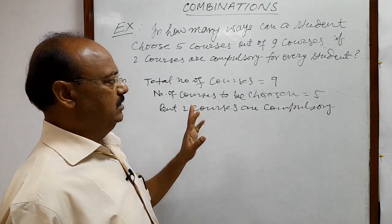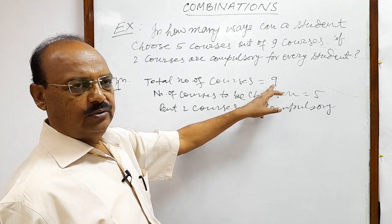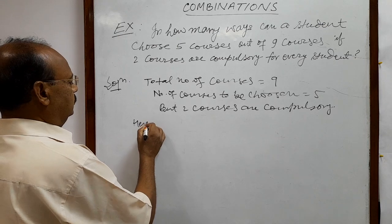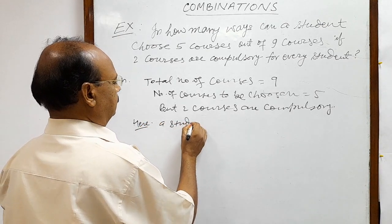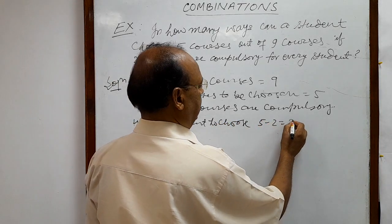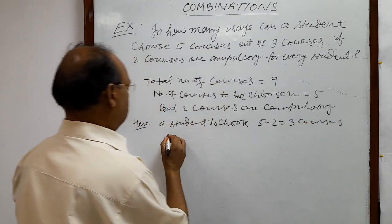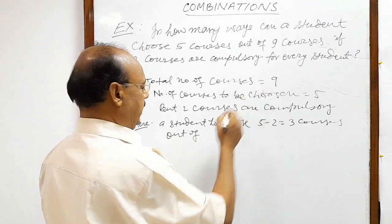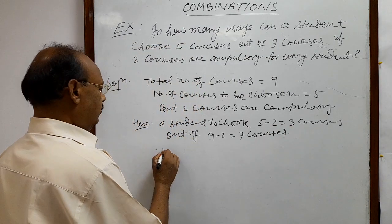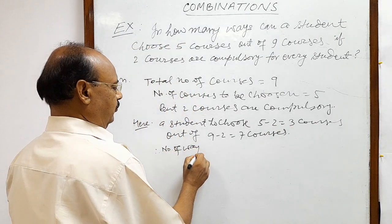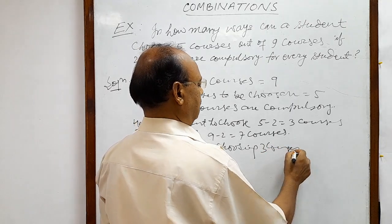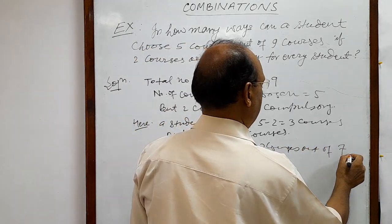A student has to choose five minus two, that is three courses, out of nine minus two, that is seven courses — because the two compulsory courses are already selected. So a student has to choose three courses out of seven. Therefore, the number of ways of choosing three courses out of seven will be C(7, 3).